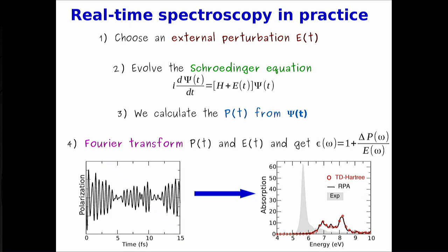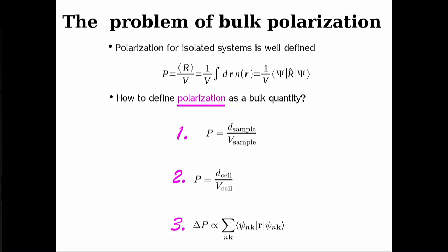There are some important technicalities. The first is how to calculate the polarization. For molecules or finite systems it is easy — you integrate the dipole divided by the volume. But for periodic systems, the definition was unknown for many years and not even given in textbooks. Let's see why.